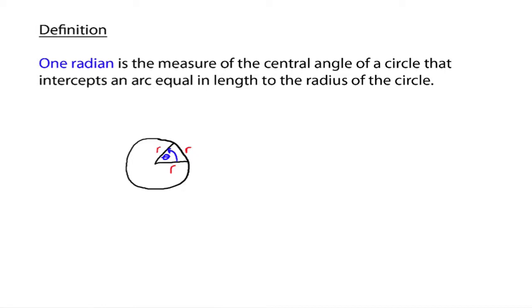Here's the definition of a radian. One radian is the measure of the central angle of a circle that intercepts an arc equal in length to the radius of the circle. So when this arc on the circle has a length the same as the radius, the angle measure inside is called one radian.